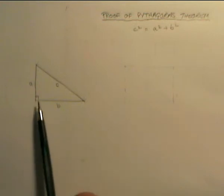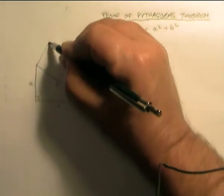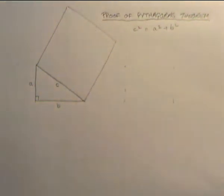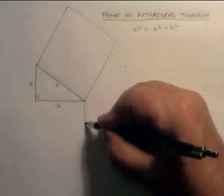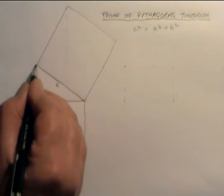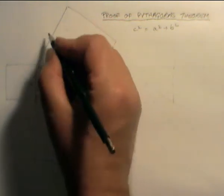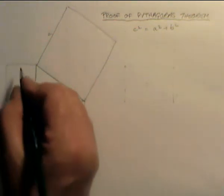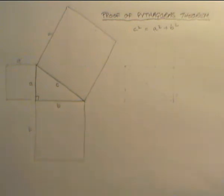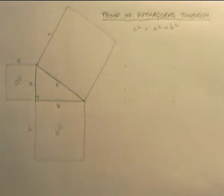What that means is if I draw a square on the hypotenuse, that square has an area which is equal to the area of this square plus this square. So the square on the hypotenuse, which has area c squared, is equal to this area which has area a squared, plus the area of this one which has area b squared. So here we've got a squared, b squared, and the area of this which is c squared.